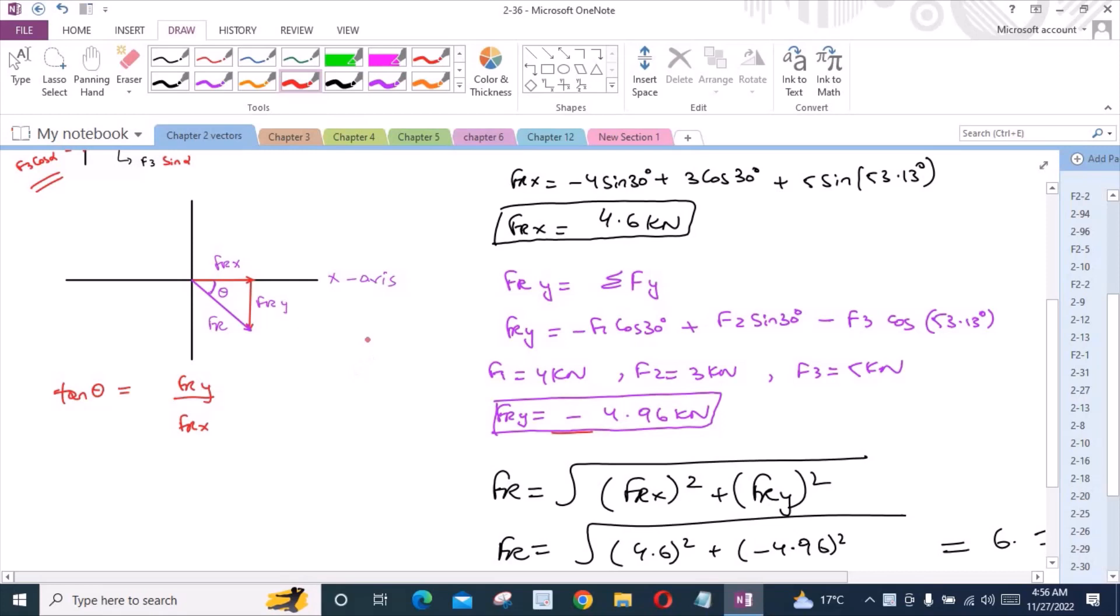Now for the angle theta, we can apply the relation tan theta. So we have tan theta is equal to FRy divided by FRx. We are just using the magnitudes, so we have 4.96 divided by 4.6. So theta is equal to 47.16 degrees. This is our second answer.